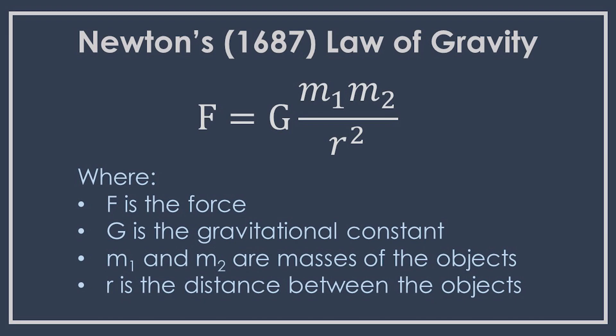What does that tell you? Well, it tells you that if you have objects that are certain masses and you put them together, they're going to attract each other, and you can create a neat little formula to describe it. But it doesn't tell you why. In order to come up with why, you have to have a theory of gravity.